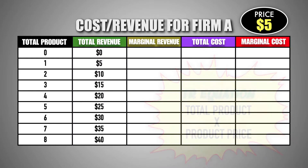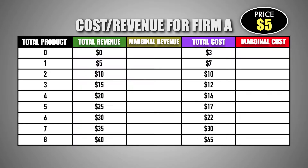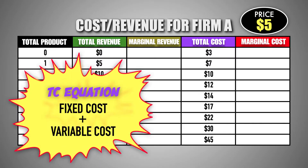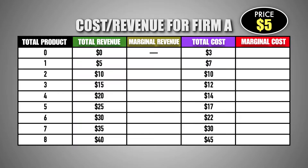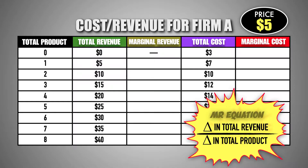We can also see the firm's total cost after producing each unit of good M, which is equal to the sum of the fixed costs and variable costs of production. To determine the marginal revenue gained from each unit of good M, we simply need to analyze the total revenue for the firm before and after the sale of each unit. The difference in total revenue gives us the marginal revenue gained by the firm when selling each unit of good M.